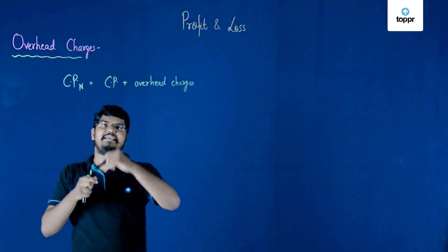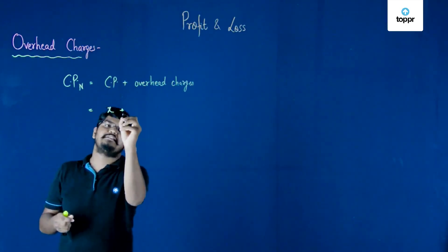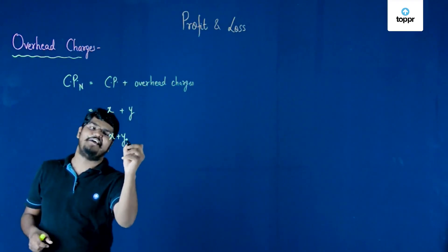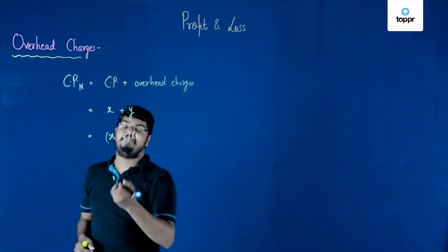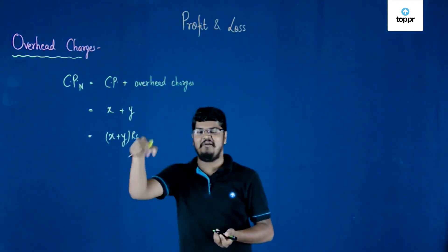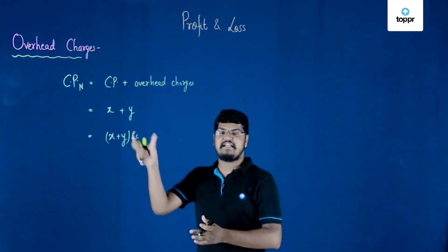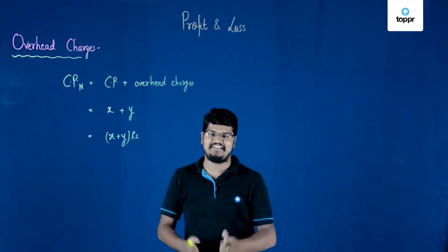So if this was X and this was Y rupees, then your actual cost price is X plus Y rupees. Now if you want to make profit, sell it above this. Let us now see a question by which we can understand overhead charges in a much better way.